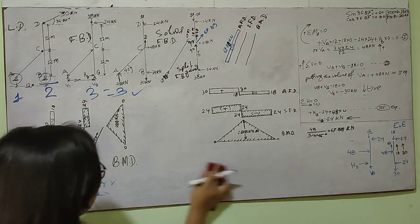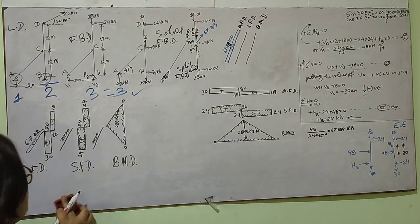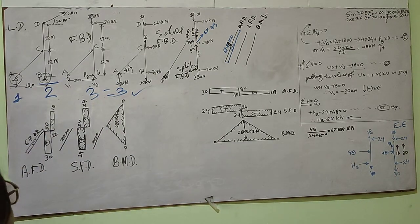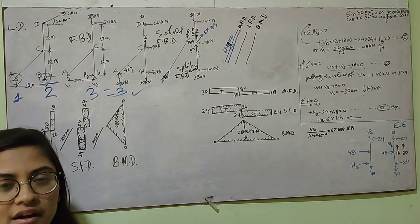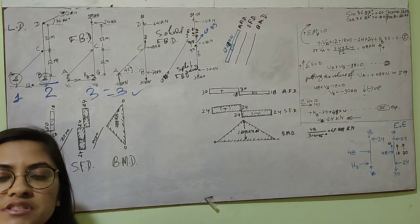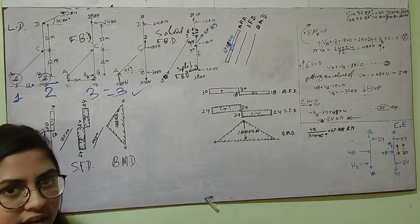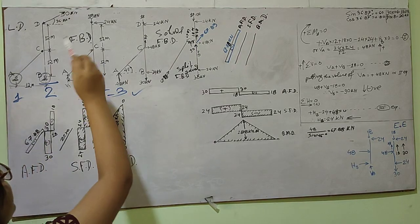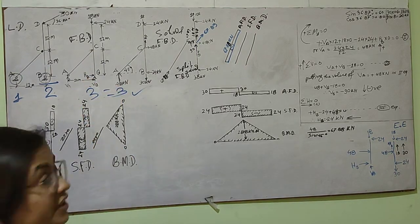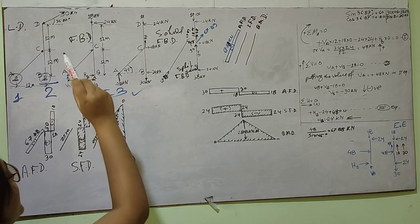In order to analyze the structure, I need to draw the free body diagram. The free body diagram is simply the removal of the supports and showing only the loads acting on it. I have resolved the 30 kilonewton load into its respective components, which gives the values 18 and 24.